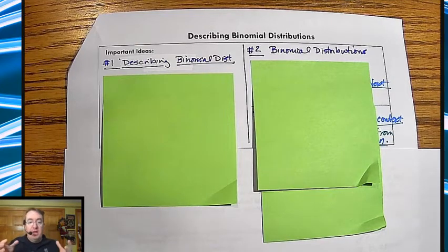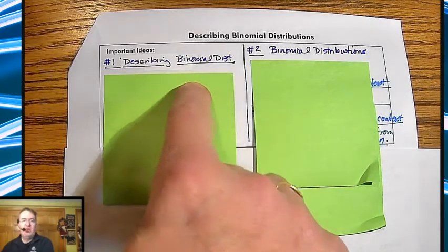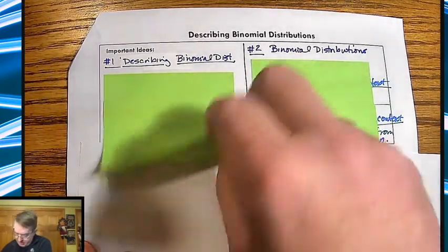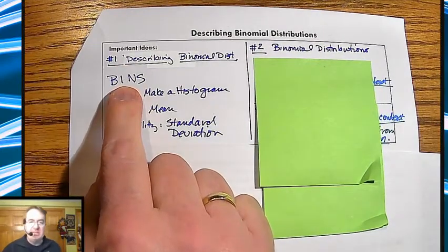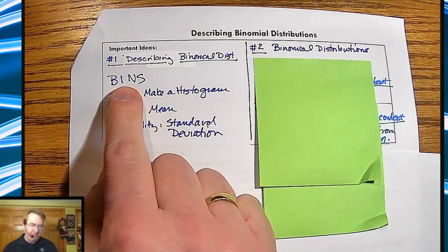Everybody, now it's time to formalize how to describe binomial distributions. So a couple of things. When describing your binomial distributions, you're still going to go through and, first of all, verify that it is a binomial distribution using our bins from last time.